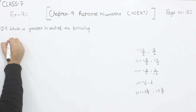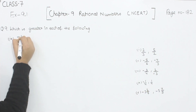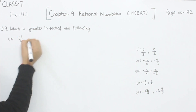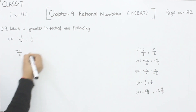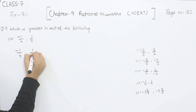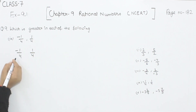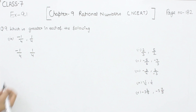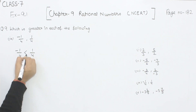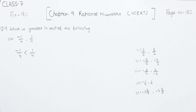Now comes part 4. In part 4 we have -1/4 and 1/4. The denominators are already the same. Since the positive number will be the bigger one, 1/4 is the greater one.